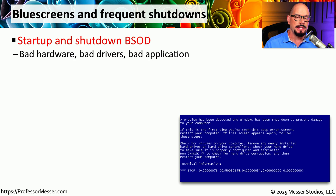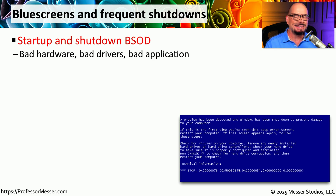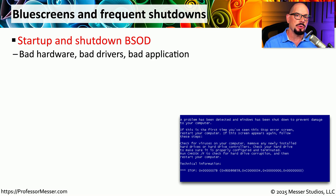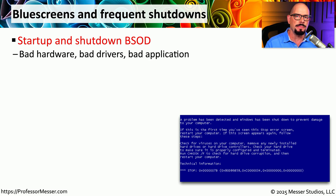This may be related to bad hardware, bad drivers, or an issue with the application you're using. But something inside of your system has determined that whatever error has occurred prevents the entire operating system from continuing. Because of that, it's going to put a message on our screen that tells us that Windows has to stop, and then it gives us some information that might help us with the troubleshooting process.